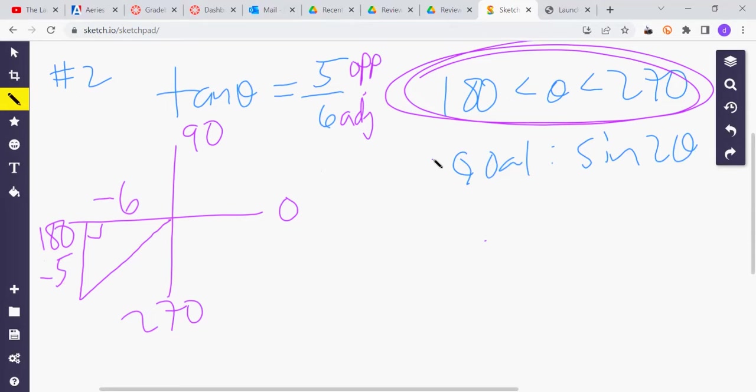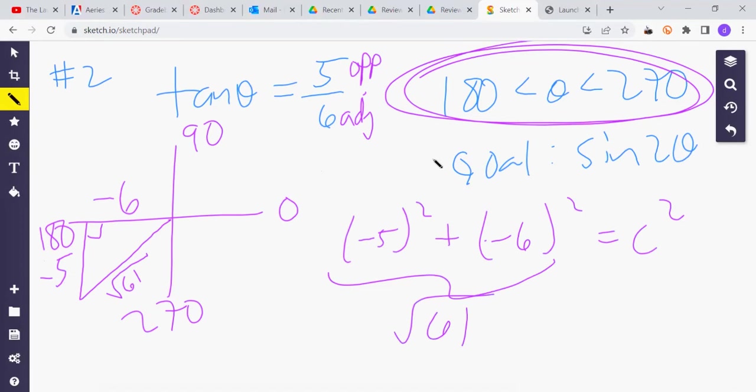So Pythagorean theorem, right there, that'll give you the square root of 61. If you do all that, 25 plus 36, 61, square root of it, that'll give you C. So we have the hypotenuse. I think now we can proceed on to the goal.